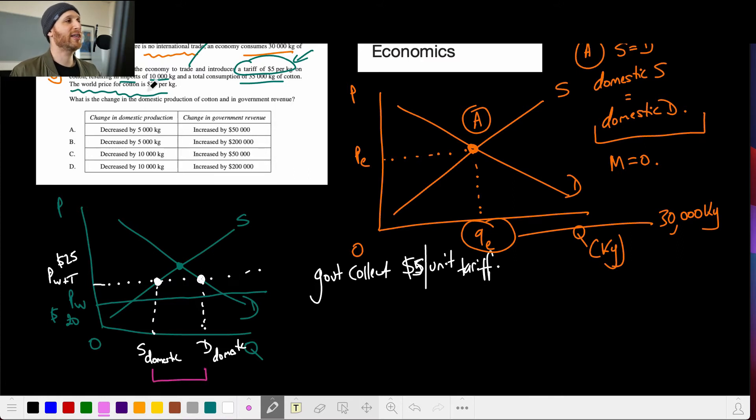So what the question is telling us is that imports are 10,000. So that this distance here, between those two points, will be 10,000. Okay, that's fine, we're still going.